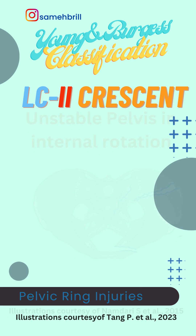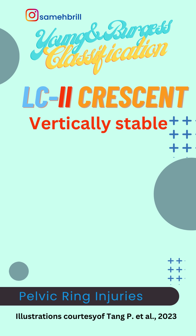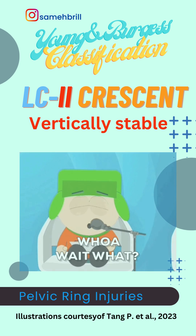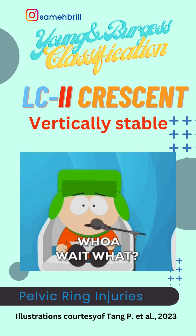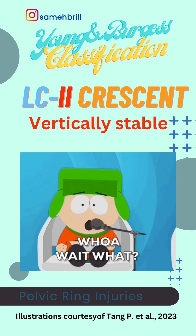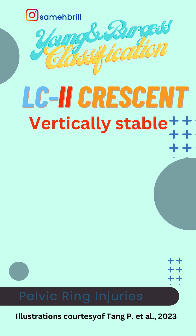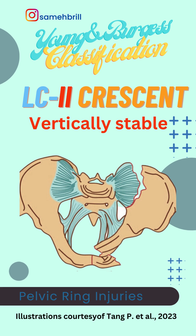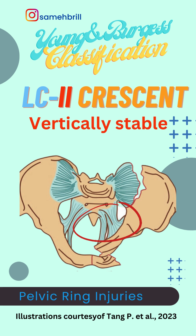Remember in LC2, the pelvis is still vertically stable. But why is it vertically stable despite the fact that the posterior sacroiliac complex is disrupted? That's because the sacrotuberous ligaments are still intact.